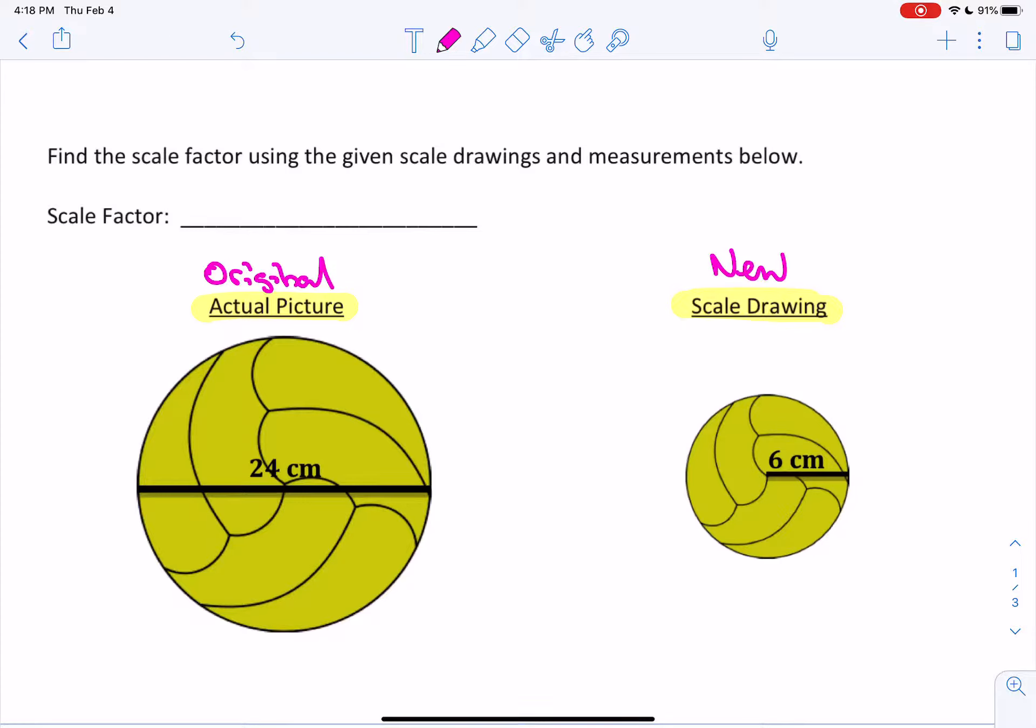Now, don't let this trip you up, okay? Here they gave us the diameter, meaning the full length across the ball, and they're telling us it's 24 centimeters. In the scale drawing, they only gave us the radius, half the length of the ball. So if we want to know the full length of the ball, it would be 6 centimeters times 2. So the whole thing is going to be 12 centimeters.